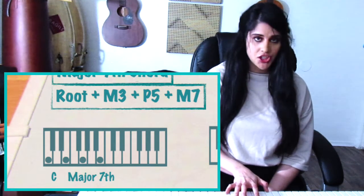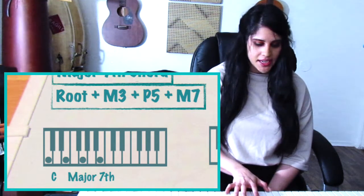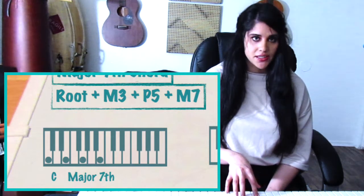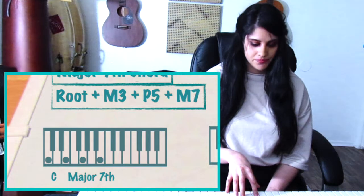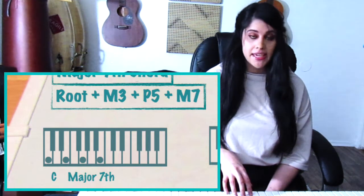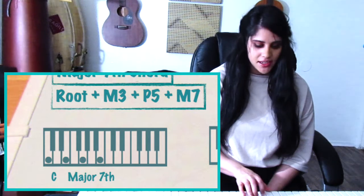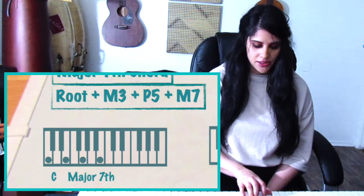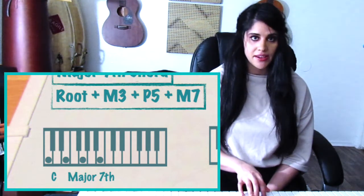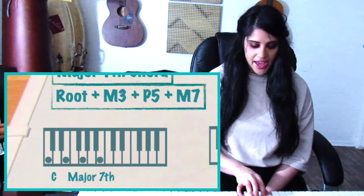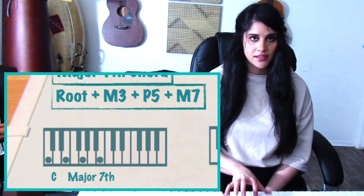So the relationship between the first two notes, C and E, is a major interval. E to G is another major interval. G to B is a major third. The relationship from C to G is a perfect fifth. And from C to B is a major seventh.